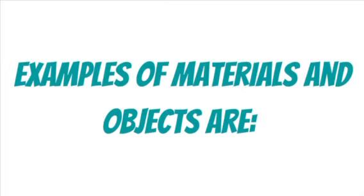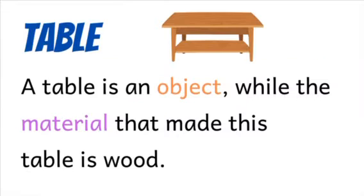Examples of materials and objects are: 1. Table. A table is an object, while the material that made this table is wood.